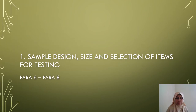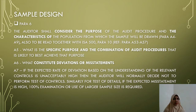The first requirement is sample design, size and selection of items for testing. For sample design, the auditor shall consider the purpose of the audit procedure and the characteristics of the population from which the sample will be drawn. The auditor also needs to know the combination of audit procedures that is likely to best achieve that purpose.